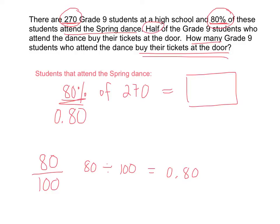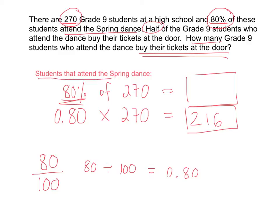We're simply moving the decimal place two places to the left, so 80% is 0.80. Now we're going to use a calculator and multiply 0.80 times 270, since it's 80% of 270. Whenever you see the word 'of' in math, we know that we need to multiply. So what's 0.80 multiplied by 270? We get an answer of 216.